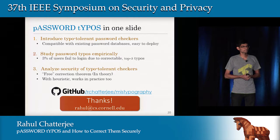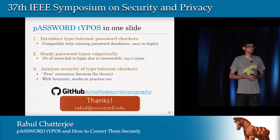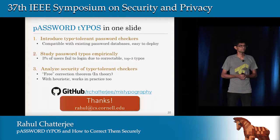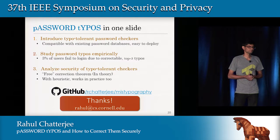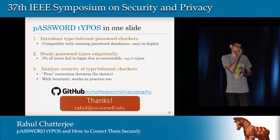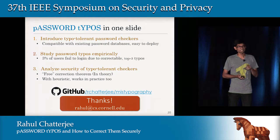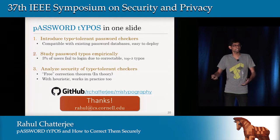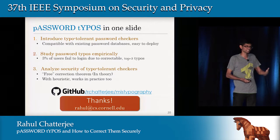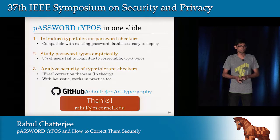Another question: Did you look at cross-site password translation as a threat model? For example, users who have base passwords with slight permutations across different sites — their password on one site may be almost a typo of their password on another. We haven't looked at that actually. That's what we call a targeted attack. There hasn't been much study on targeted attacks, and we were looking into it. We don't even know how targeted attack works in the case of exact checking, let alone typo-tolerant checking — so we did not check it yet.